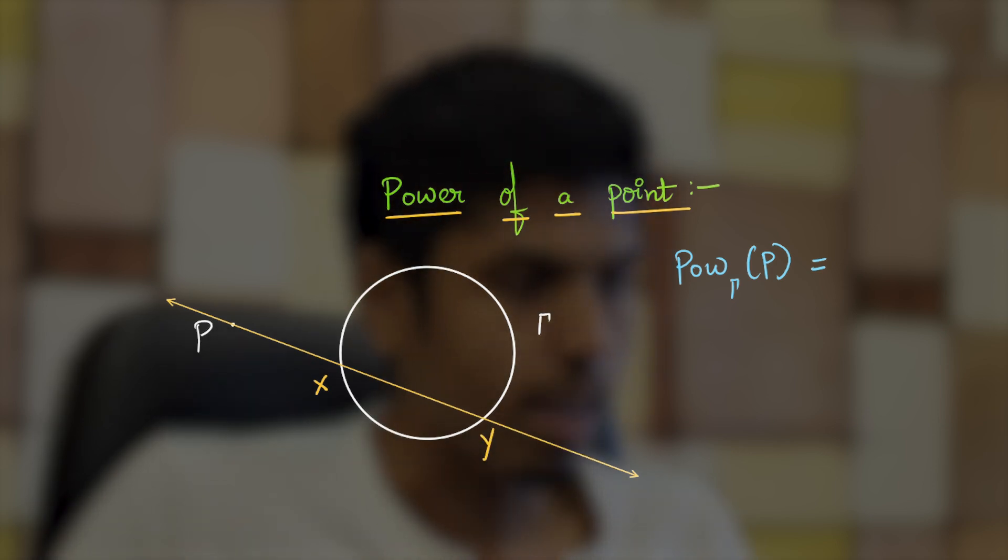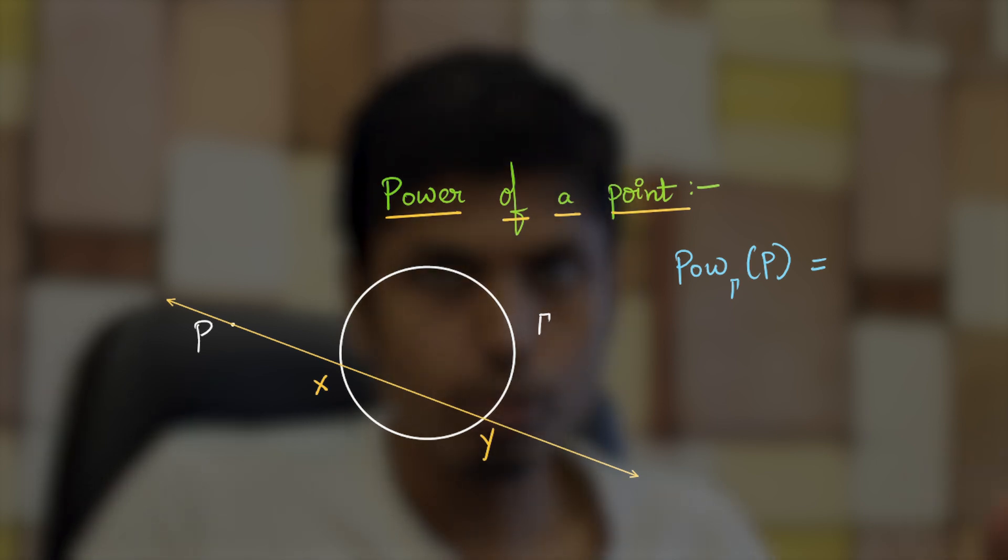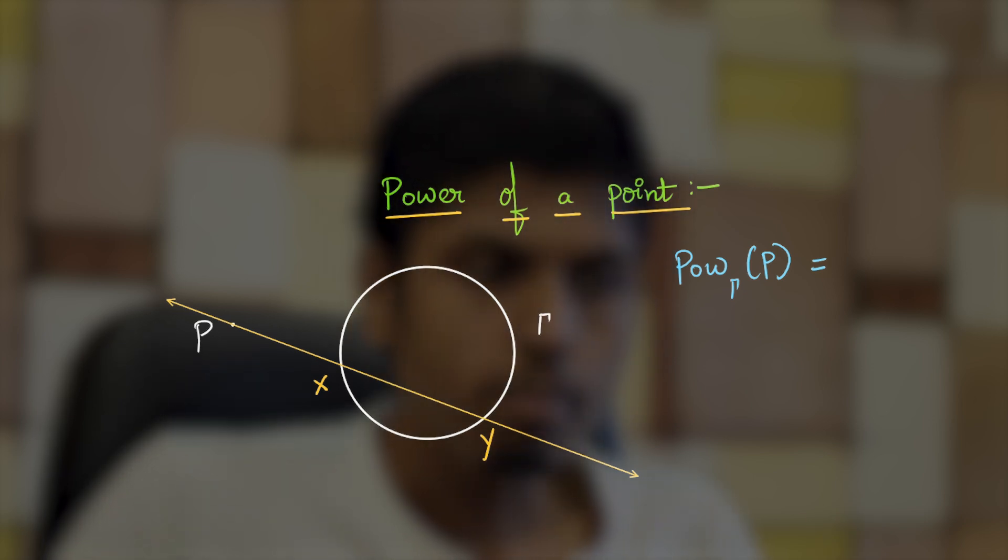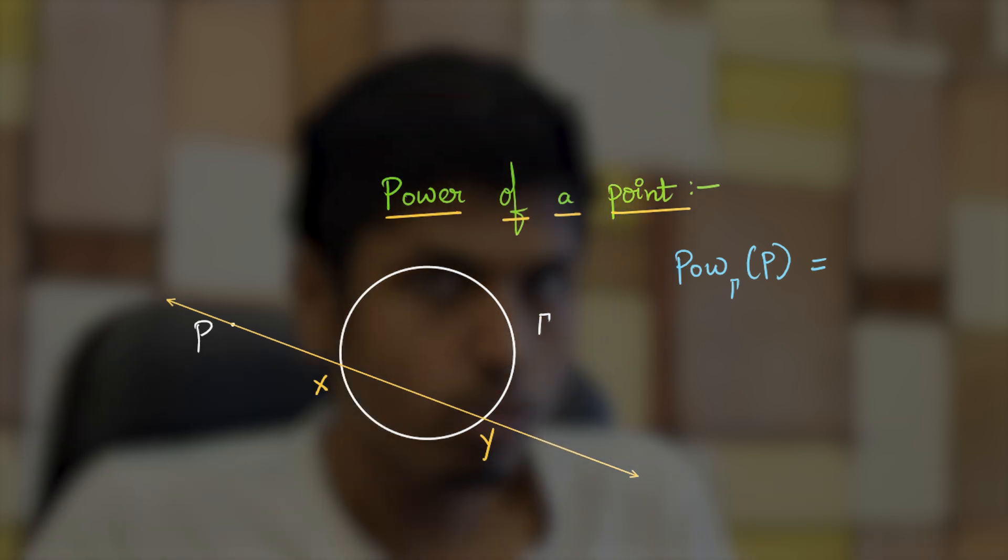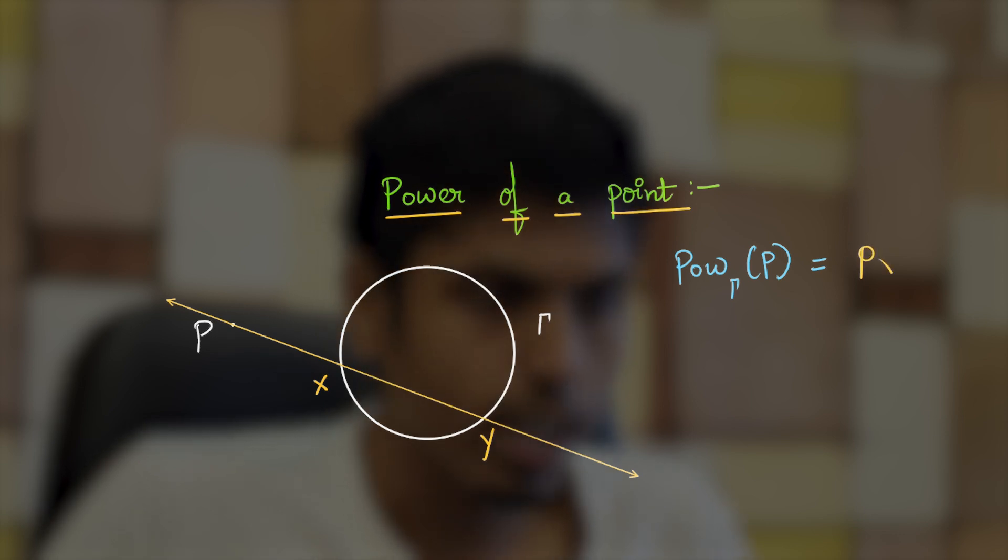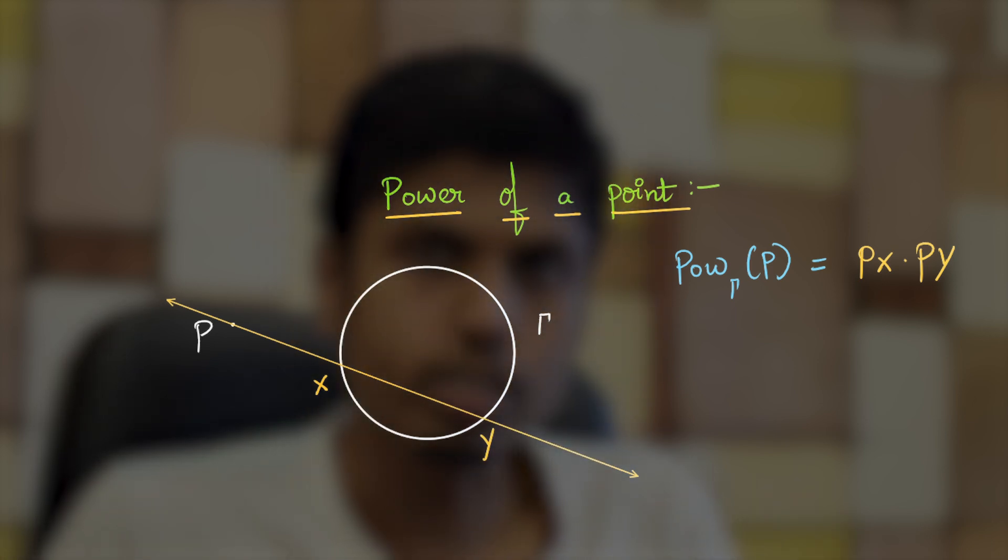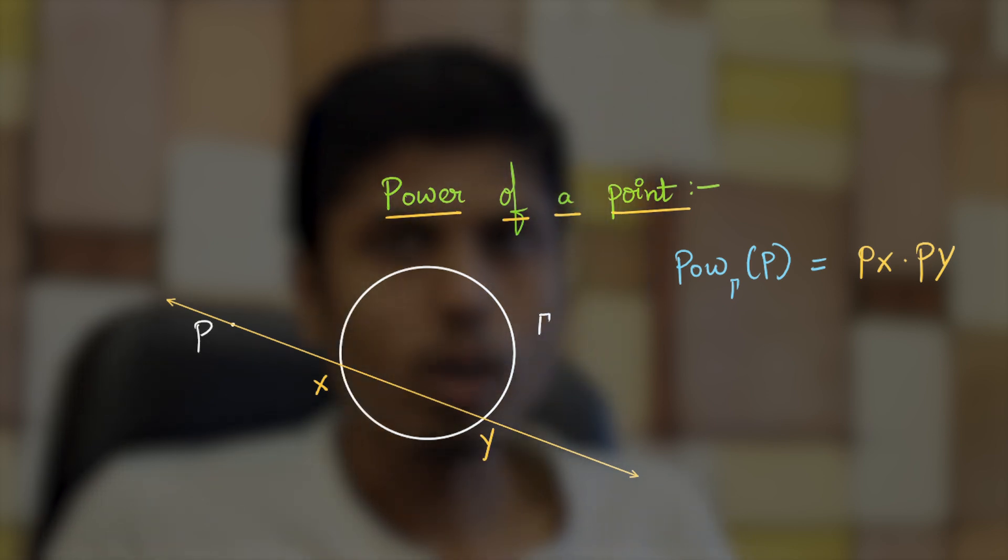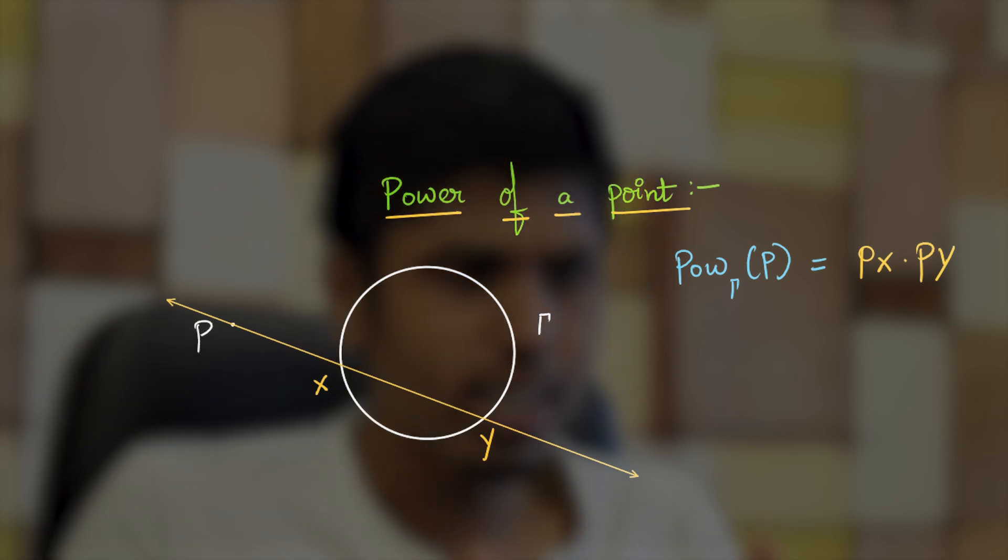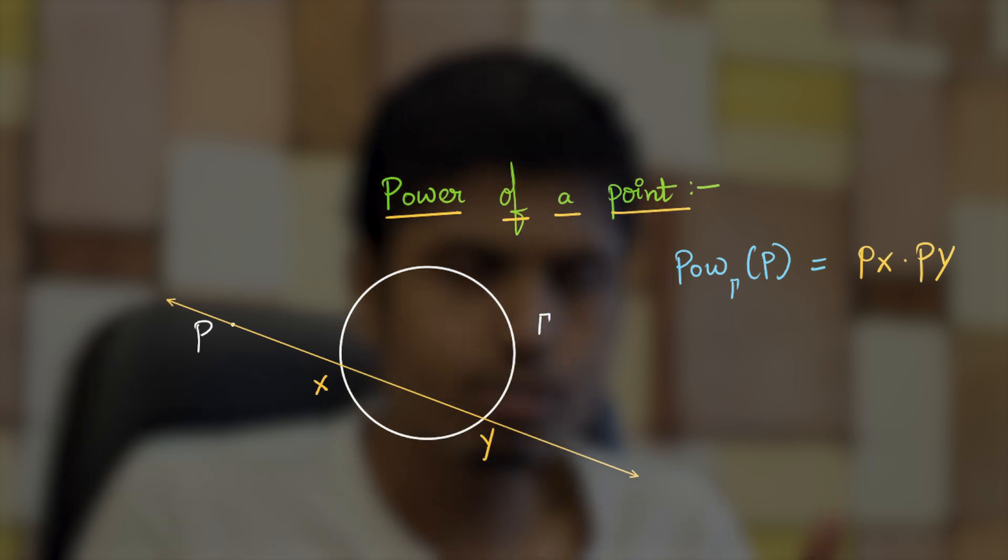Let it intersect the circle at the points x and y. X is the first point of intersection or the closer point of intersection with gamma. Then power of this point with respect to the circle gamma is defined as PX times PY - that is, distance of P to the first point of intersection times the distance of P to the second point of intersection. But you may wonder why this is being defined and how this is independent of the line with which we define it.